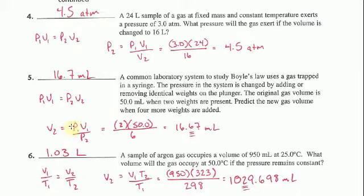Now, some students may be confused about what the initial pressure is. Because we don't have an atmosphere value, we don't have a Torr value, we don't have a kilopascals value or a millimeters of mercury value. All we have are these weights. But that's fine because it's a relative amount of pressure.